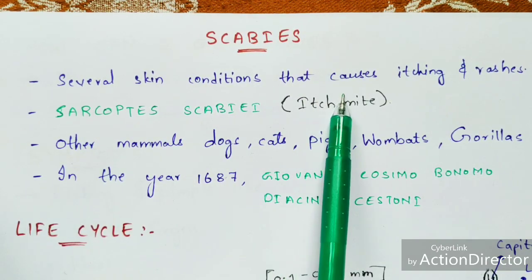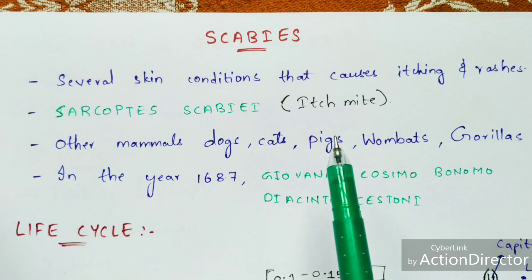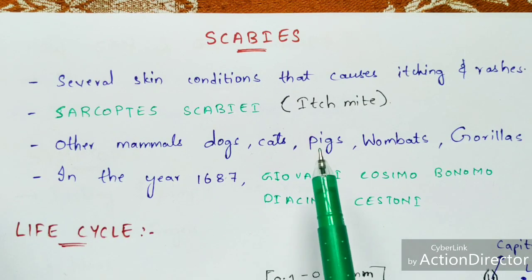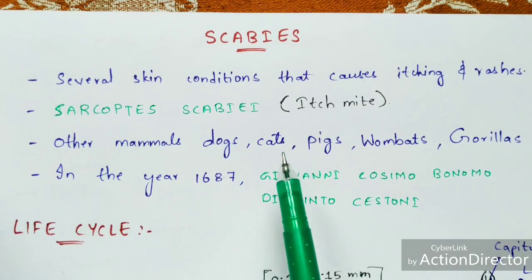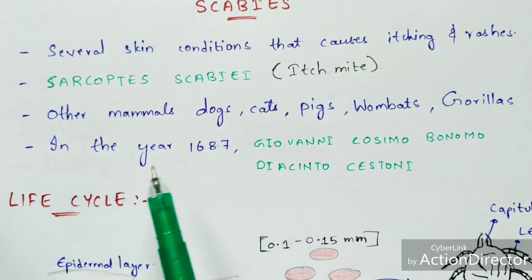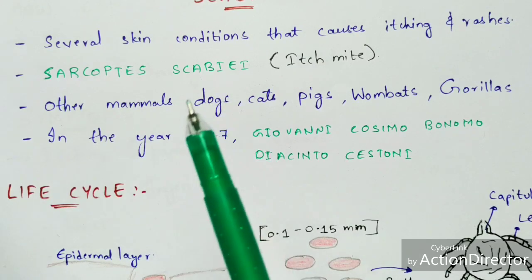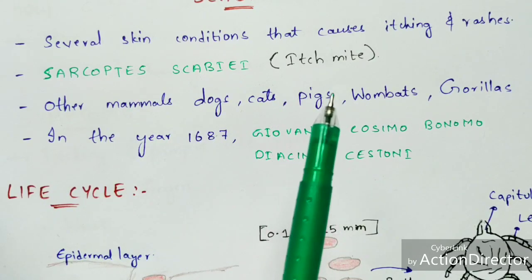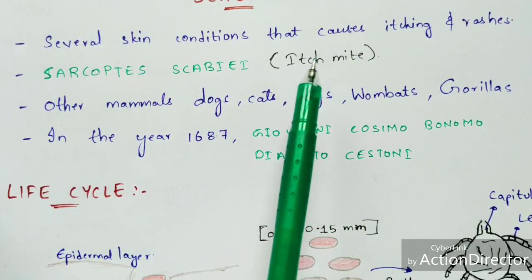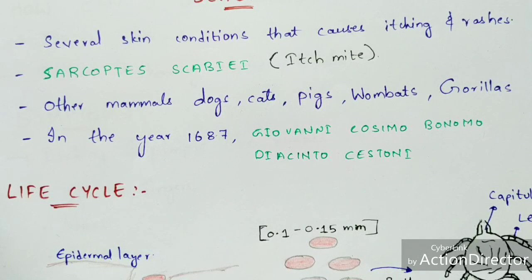This scabies disease is caused by the itch mite. It can be seen in humans and also in other mammals such as dogs, cats, pigs, wombats, and gorillas. Coming to the discovery of scabies — in the year 1687, two scientists called Giovanni Cosimo Bonomo and Diacinto Cestoni discovered scabies and also discovered the causative agent, the structure, and the life cycle exhibited by this itch mite.